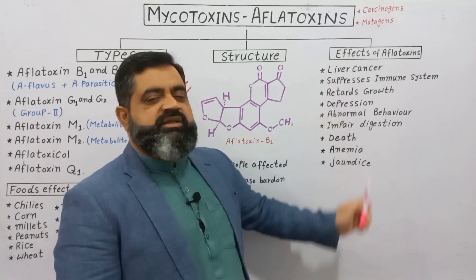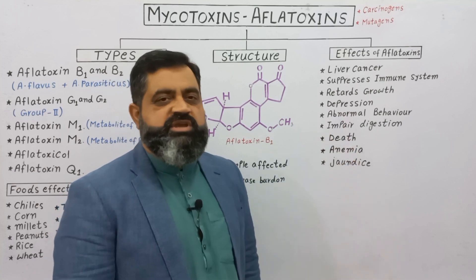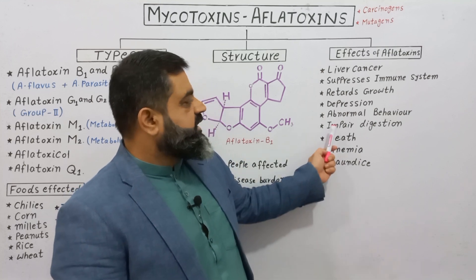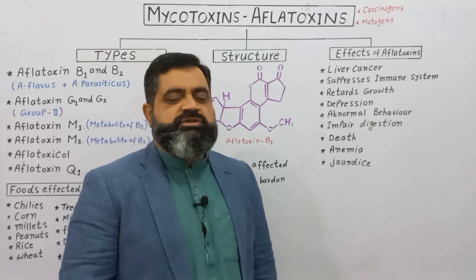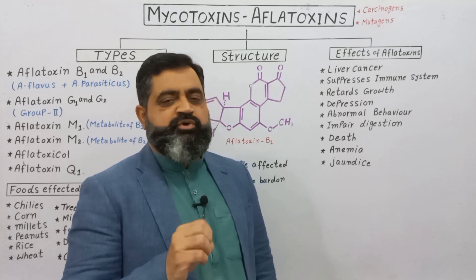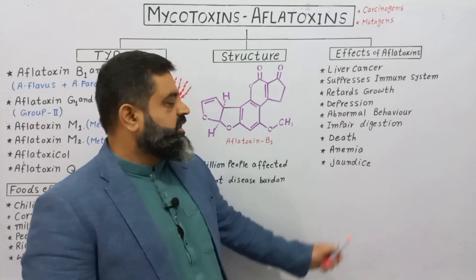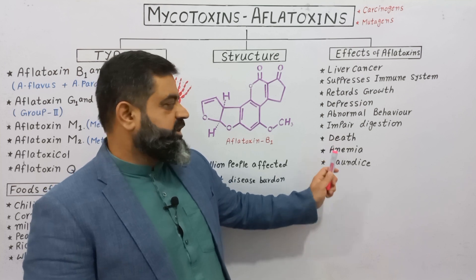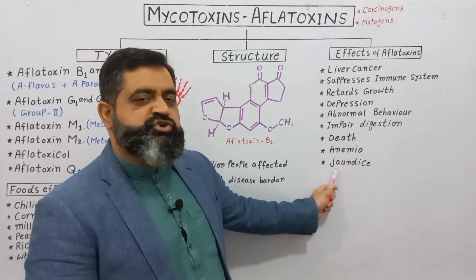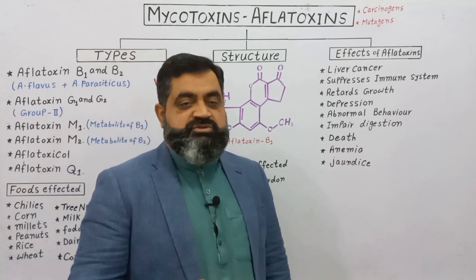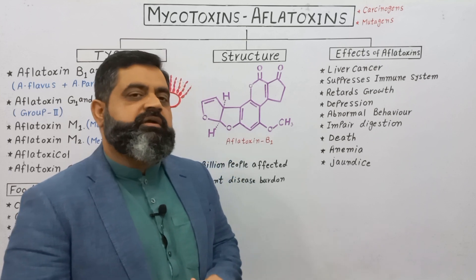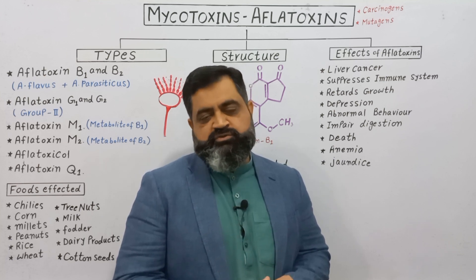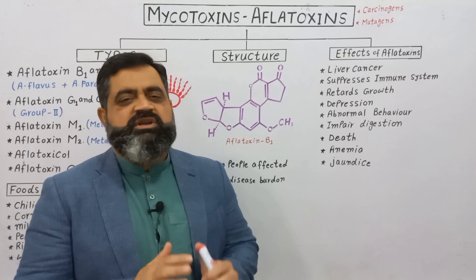In children, aflatoxins retard growth and development. They can also cause depression and abnormal behavior if certain amounts reach the nervous system. They impair digestion by blocking absorption of lipids, carbohydrates, and proteins in the small intestine. A large amount can cause death. They can also cause anemia, jaundice, and liver cirrhosis.